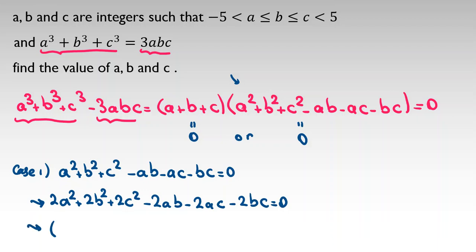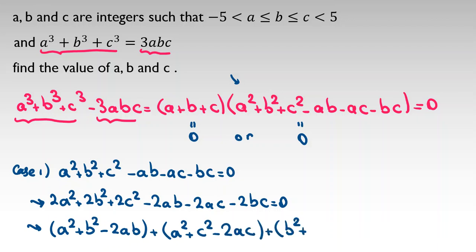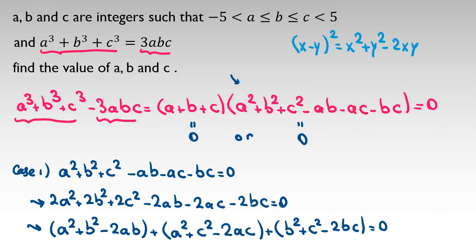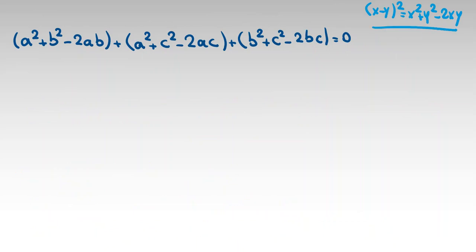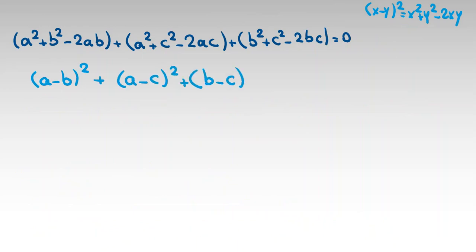Then we rearrange this as a squared plus b squared minus 2ab plus a squared plus c squared minus 2ac plus b squared plus c squared minus 2bc equals 0. Using the identity x minus y squared equals x squared plus y squared minus 2xy, we rewrite this as a minus b squared plus a minus c squared plus b minus c squared equals 0.